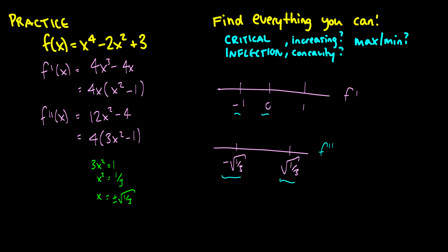Now we find intervals of increasing and decreasing. At x = −2 we get a negative value; at x = −0.5 we get a positive value; at x = 0.5 we get a negative value; at x greater than 1 we get a positive value. Where there are positives it increases, where there are negatives it decreases. So x = −1 is a local minimum, x = 0 is a local maximum, and x = 1 is a local minimum.